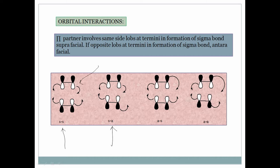For antara-supra, the left side uses the white lobe from the bottom and the right side uses the black lobe from the top — making it the antara partner — while the other component uses white lobes from the top face on both sides, making it supra. For antara-antara, one lobe is from the top face and the other black lobe is also from the top or bottom face, making both components antara partners.